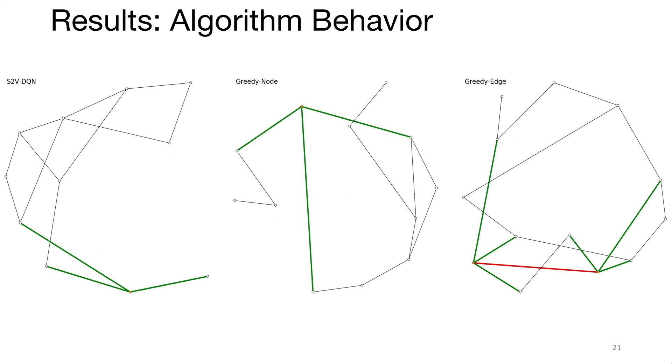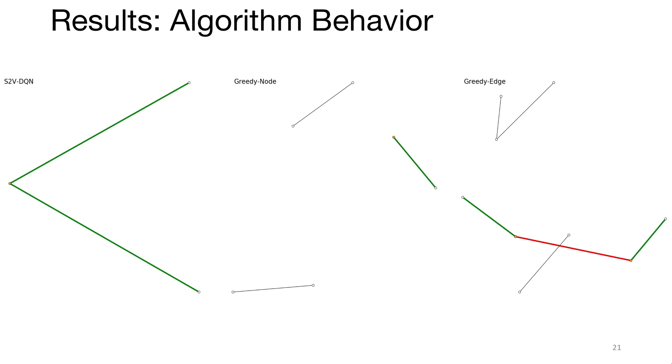For vertex cover, we also learned to keep the connectivity of graph during planning. This is different from some known heuristics.